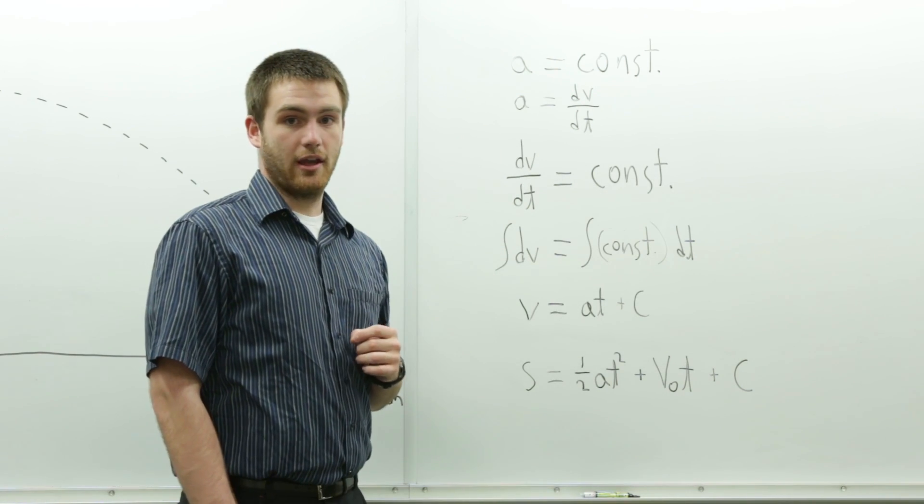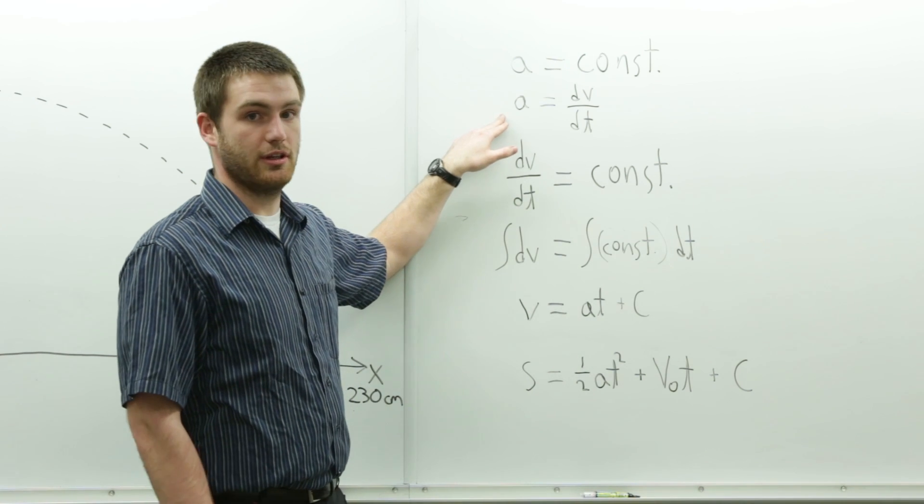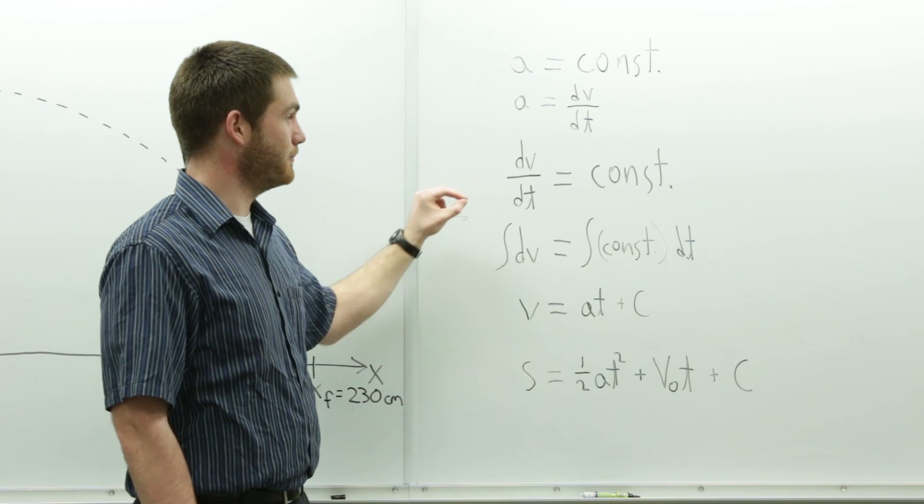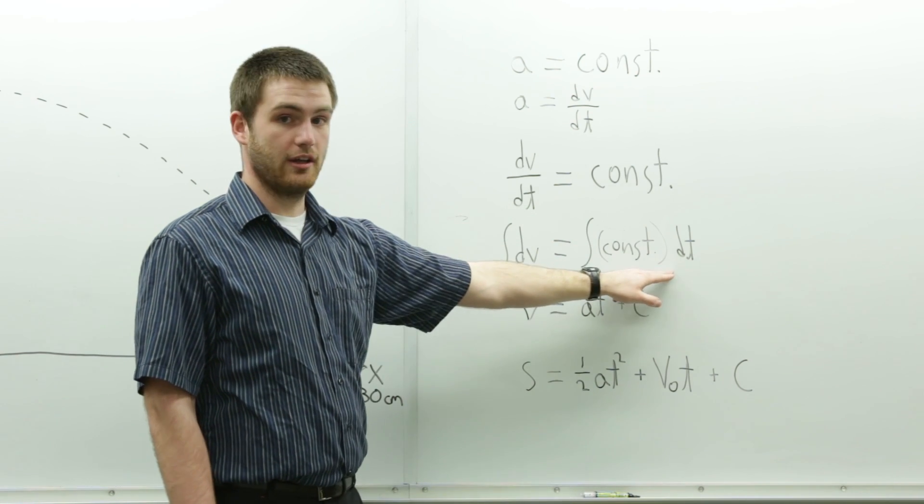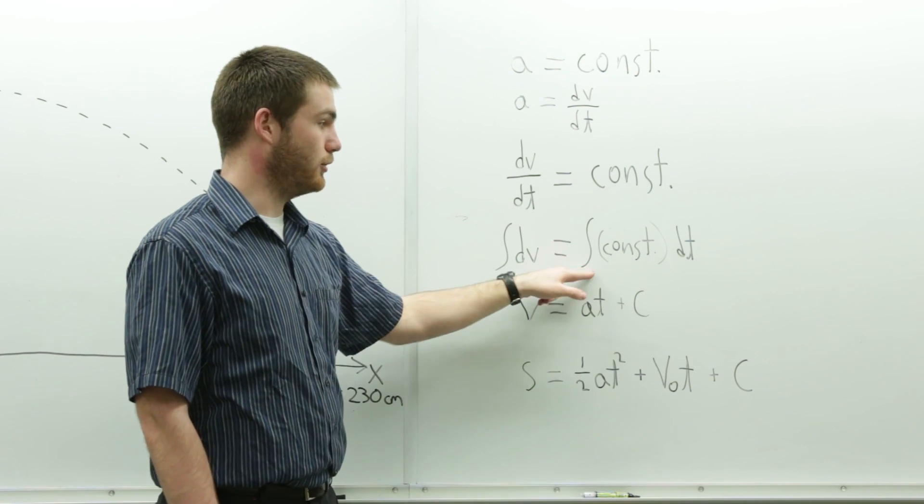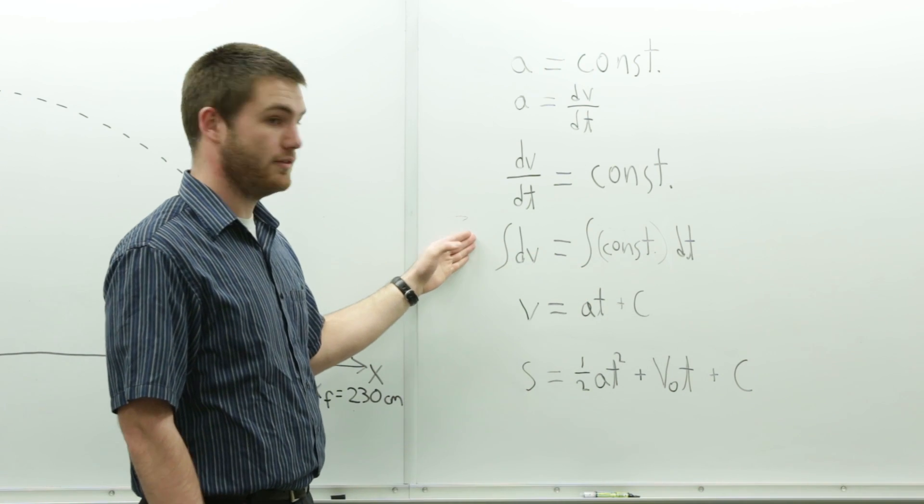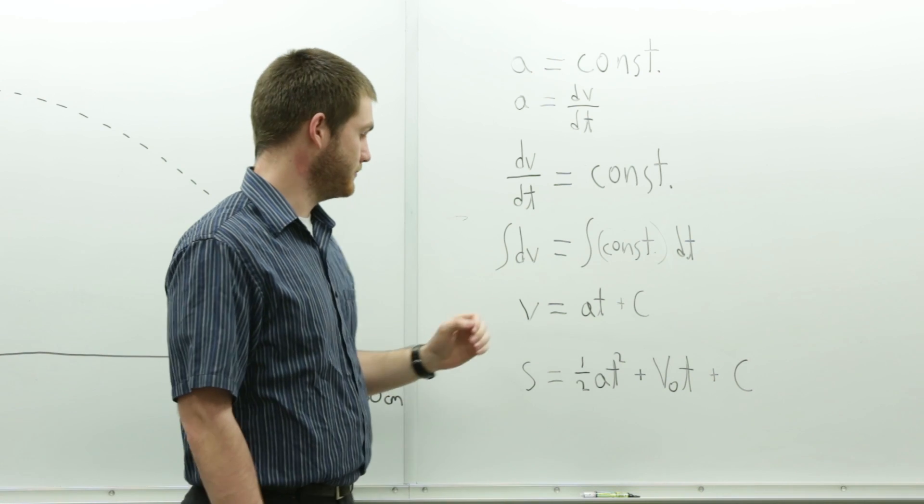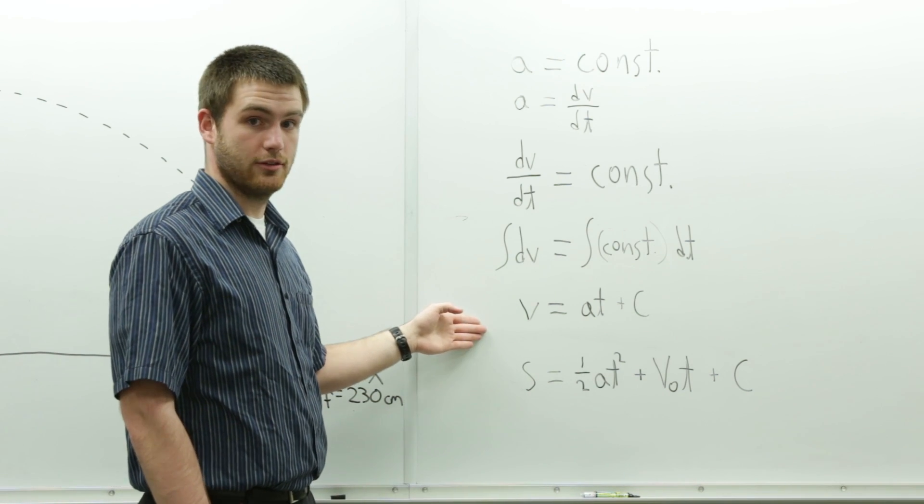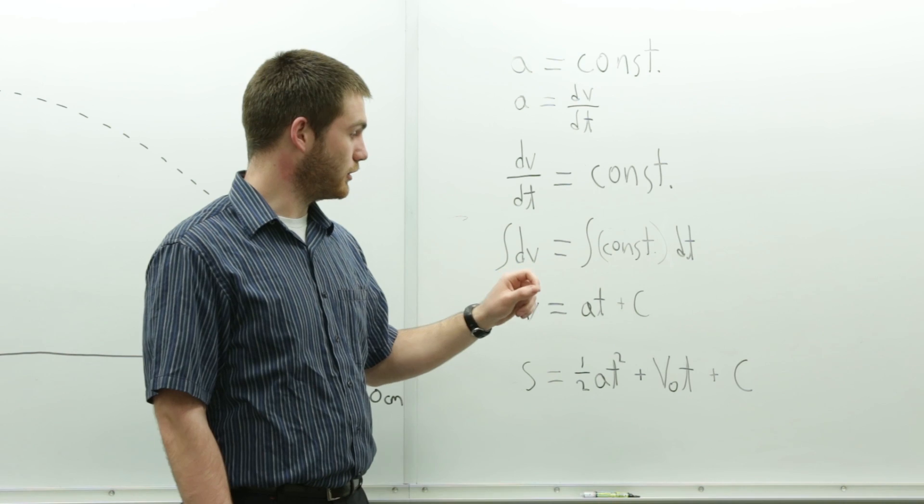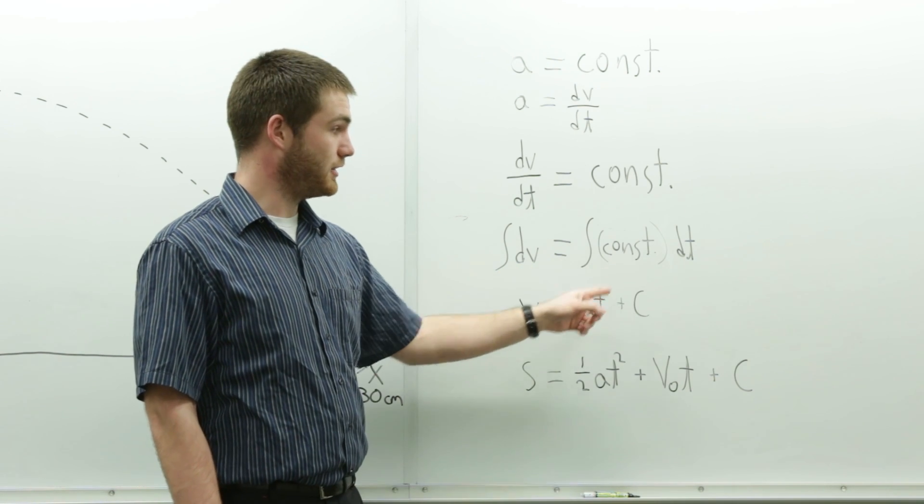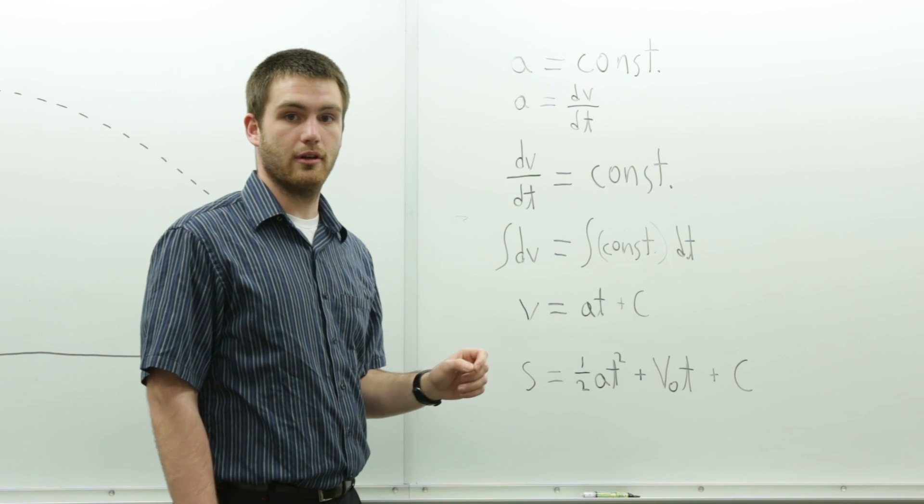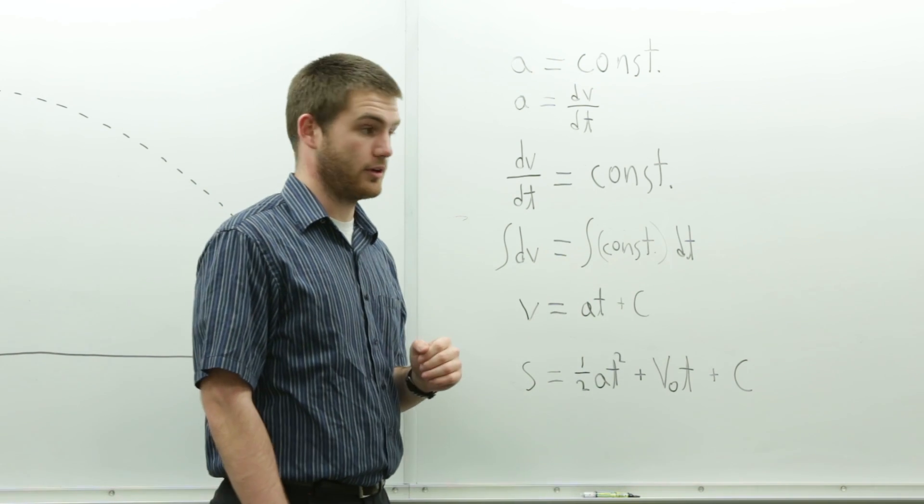In order to get velocity from that, you can split acceleration into dv over dt. If you move the dt onto the other side, you can take the integral of both sides. The integral of dv is v, so you get velocity equals whatever your acceleration was times time, because you took it with respect to time, and you get an additional constant, which would be your initial velocity, whatever it started at.